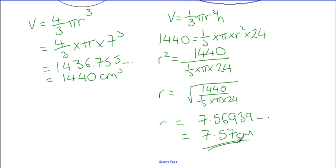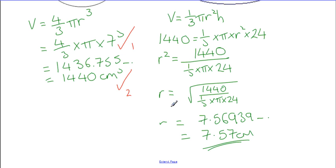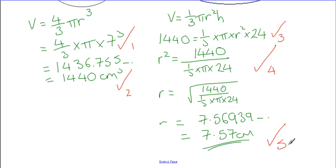Marks for question six — five marks total: one for substituting correctly into the volume of the sphere, one for calculating the volume of the sphere, one for substituting correctly into the volume of the cone formula, one for rearranging to get r², and one for taking the square root to get your final answer.